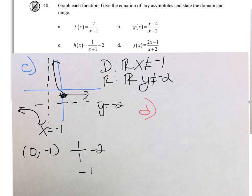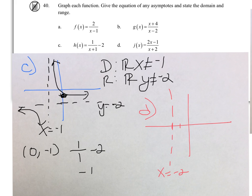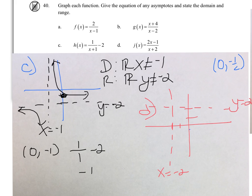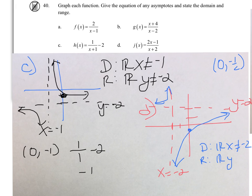And lastly for D, we have a vertical asymptote at X equals negative 2. For the horizontal asymptote, comparing the numerator and denominator degrees, they're the same, so we divide the leading coefficients and get Y equals 2. Substituting in 0, we get negative 1 half. Domain is all reals, X cannot equal negative 2, and the range is all reals, Y cannot equal 2.